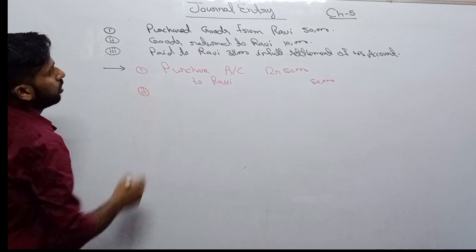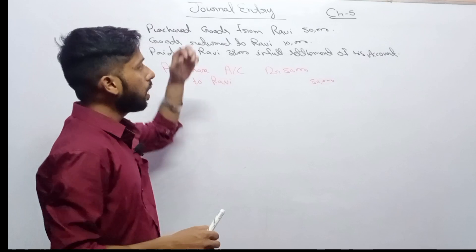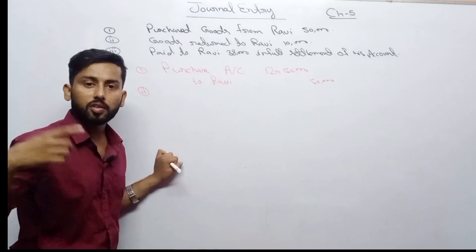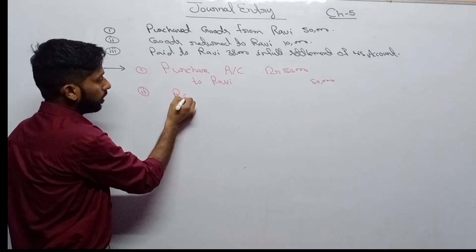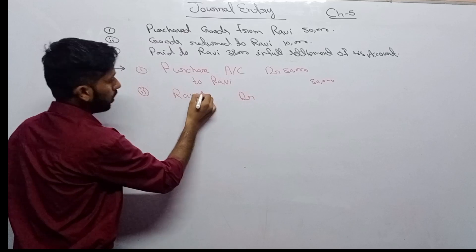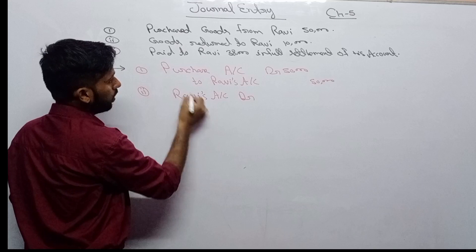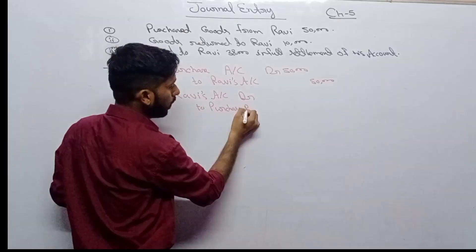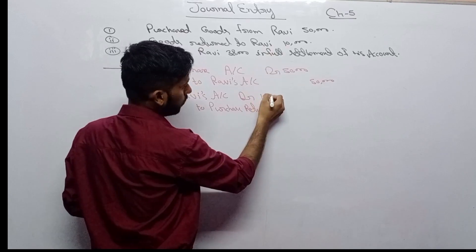Second entry, number two: goods return to Ravi. We had purchased goods from Ravi worth 50,000. Now we are returning goods to Ravi. When we return goods to Ravi, Ravi's account goes up, so Ravi account debit, to Purchase Return account. Goods worth 10,000 are being returned, so write 10,000.